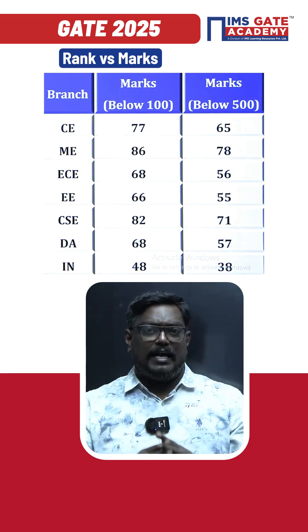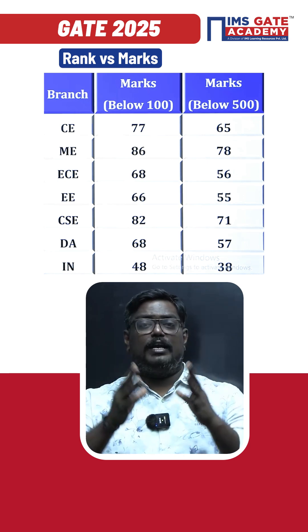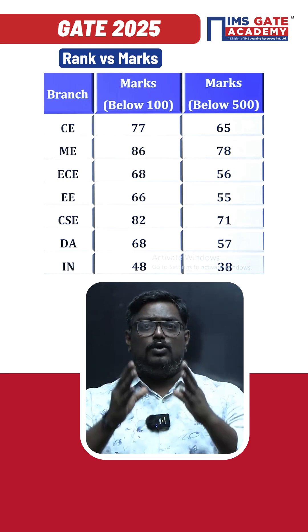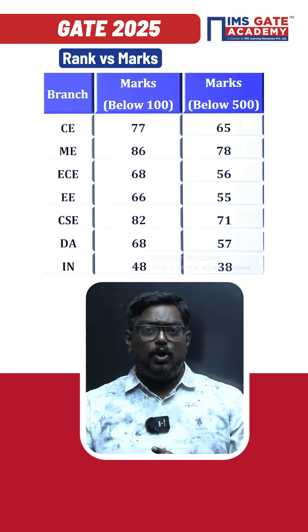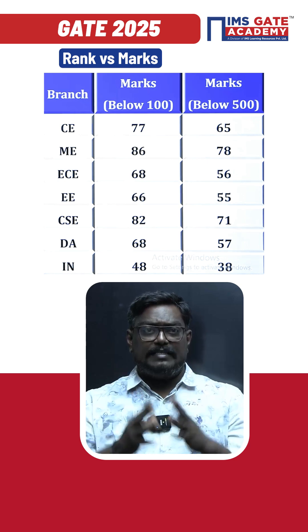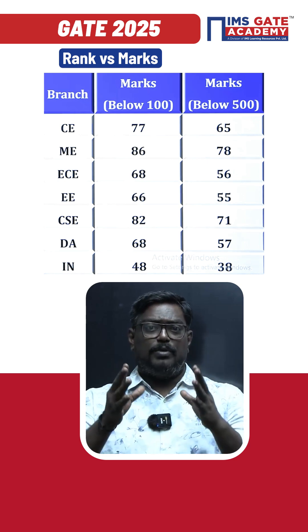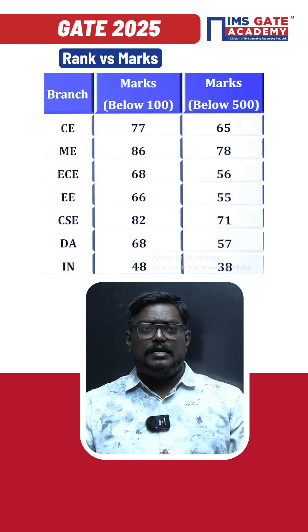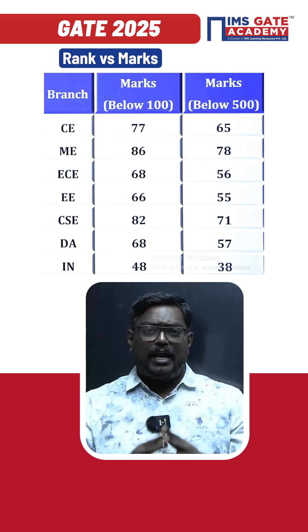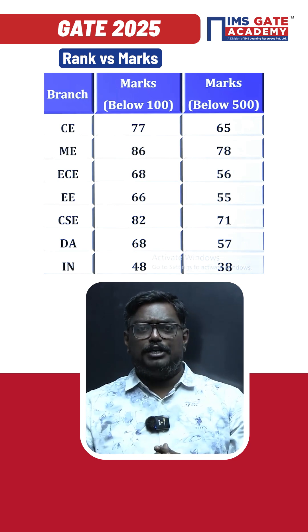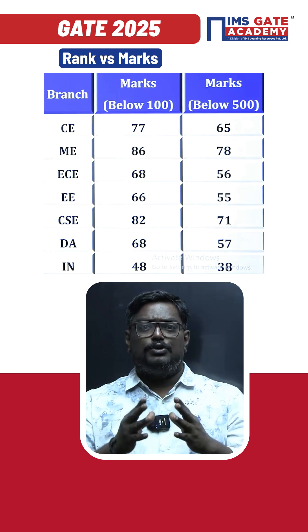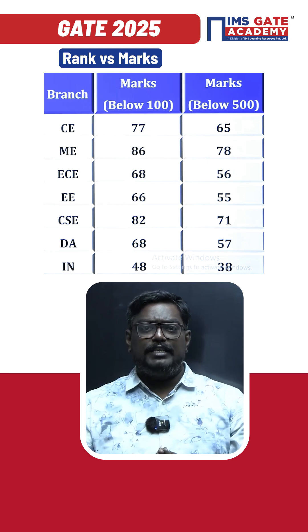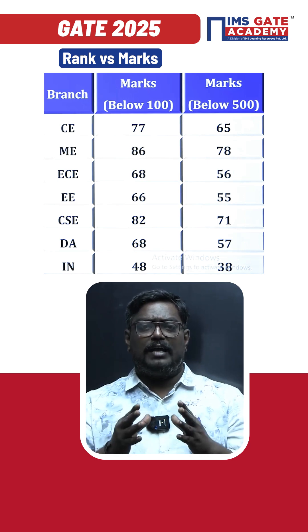Similarly for mechanical, it is slightly higher. For GATE 25, to secure a rank below 100 it is 86 marks, and for below 500 it is 78 marks. Similarly for electronics and communication engineering, you should secure 68 marks for a rank below 100.